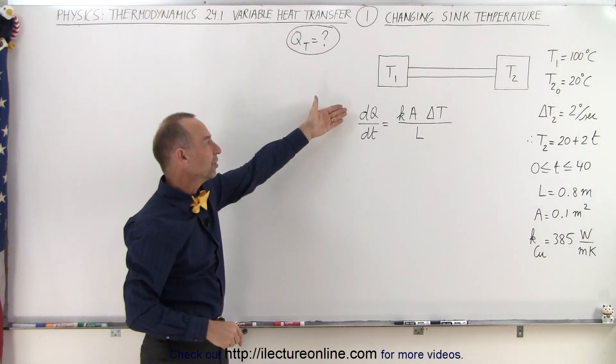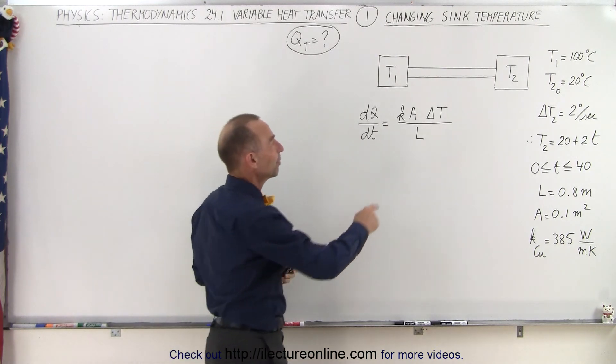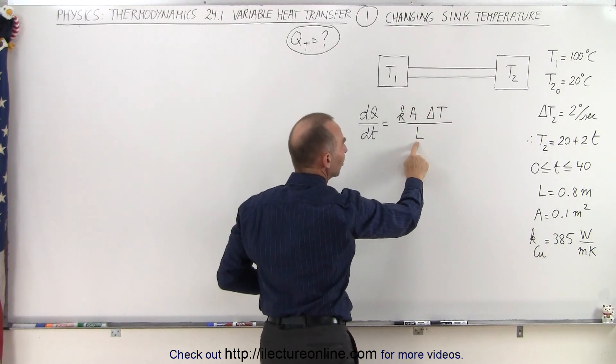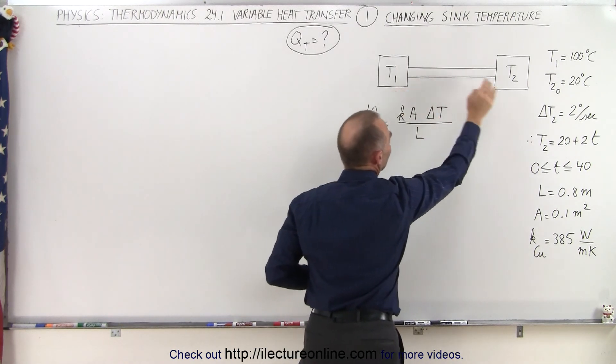The equation that we use is dQ/dt, the amount of heat per unit time being transferred depends upon the heat conductivity constant, the cross-sectional area of the path, the length of the path, and the difference in temperature between the source and the sink.